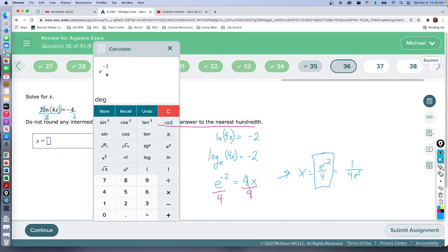You've got to come down, so I do my right arrow, brings me down here. I'm going to do divided by four, and that gives us this as our answer: zero point zero three. We want to the nearest hundredths.